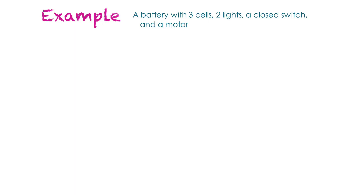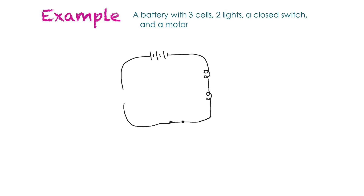Our next example: draw a circuit with a battery with three cells, two lights, a closed switch, and a motor. I'll draw our battery — long, short, long, short, long, short — there's our three-cell battery. I put two lights, then a closed switch, and then around the corner I put our motor. So we have our battery with three cells, a closed switch, two lights, and a motor.